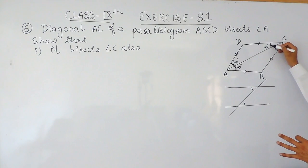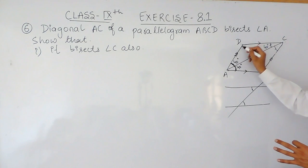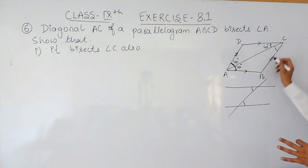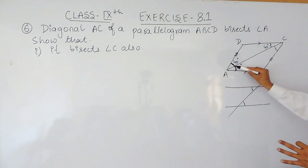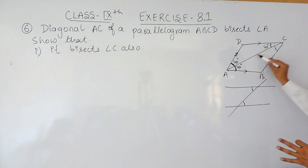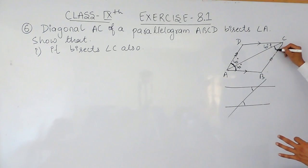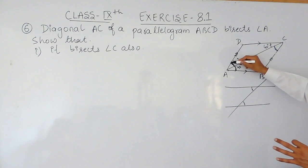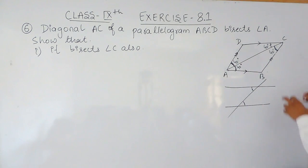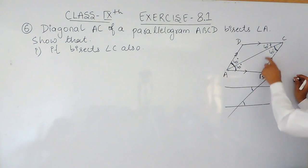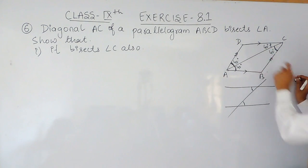This angle is 40, so this is also 40. Similarly, this side is parallel to this side and AC is a transversal, so a Z is forming here as well. The angles inside this Z must also be equal. So this angle must be equal to this angle — if this is 40 degrees, this must also be equal to 40 degrees. This is how you can prove that this diagonal bisects angle C, and these two angles are equal.